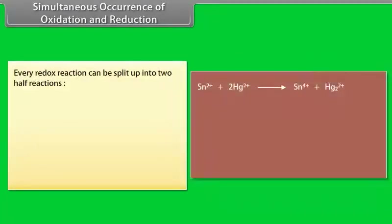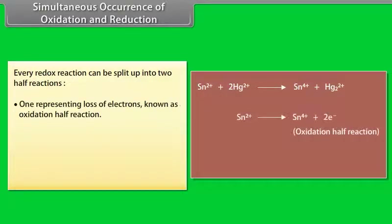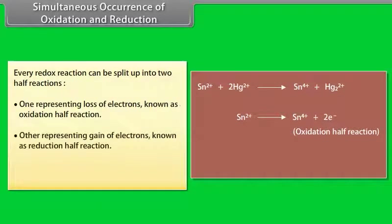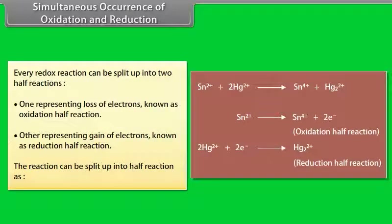Every redox reaction can be split into two half reactions: one representing loss of electrons, known as the oxidation half reaction, and the other representing gain of electrons, known as the reduction half reaction. For example: Sn²⁺ → Sn⁴⁺ + 2e⁻ is the oxidation half reaction, and 2Hg²⁺ + 2e⁻ → Hg₂²⁺ is the reduction half reaction.